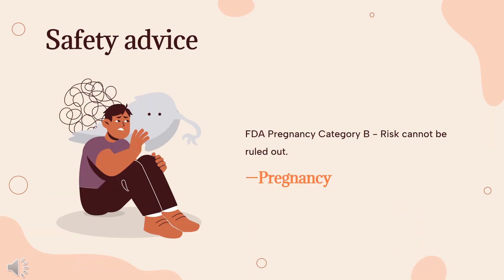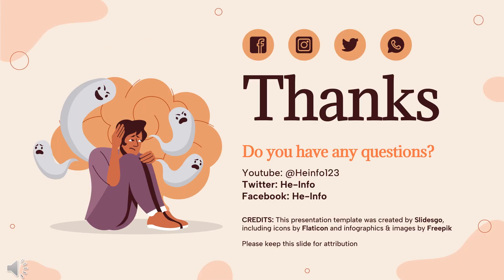Safety advice: As of now, Valdoxan (agomelatine) is a Category B drug for pregnancy, which means this drug did not cause any adverse events in animal studies, but there is no adequate data for human use.